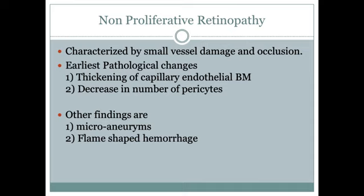Non-proliferative retinopathy is characterized by small vessel damage and occlusion. The earliest pathological sign is thickening of the capillary endothelium basement membrane and decreased number of pericytes — cells that make the basement membrane. Other findings include microaneurysms and flame-shaped hemorrhages.